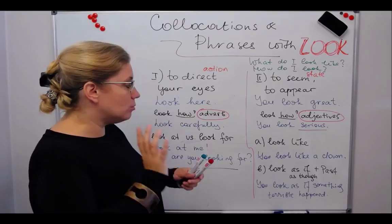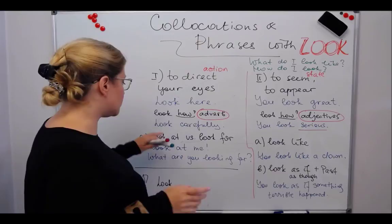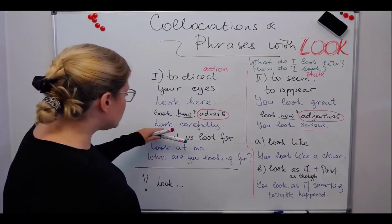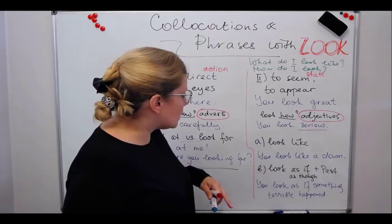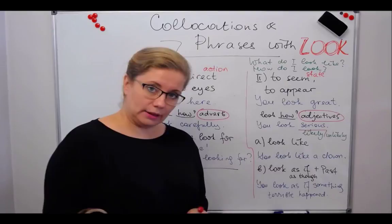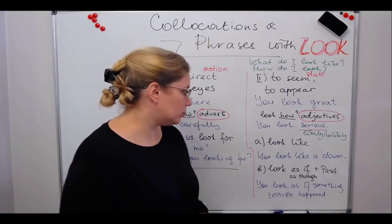Now let's think about the most typical collocations with both meanings of 'look.' We very often say 'look carefully' — with some intention, energy, or attention. So 'look carefully' is one of the most typical collocations. But we also very often say 'look likely' or 'look unlikely' — this is a very useful expression. 'Does it look likely?' meaning 'is it possible?' 'It looks unlikely to me' — there is very little chance of it.